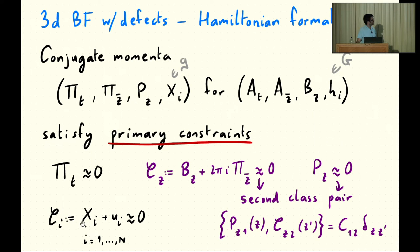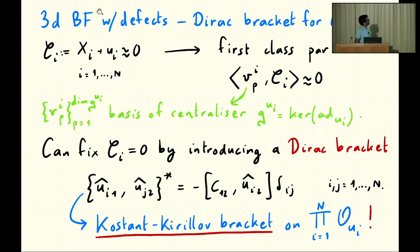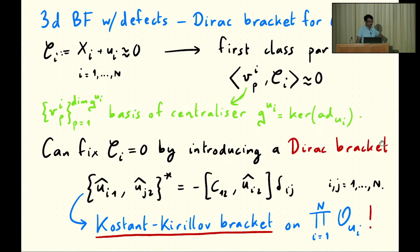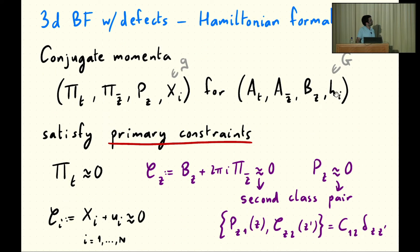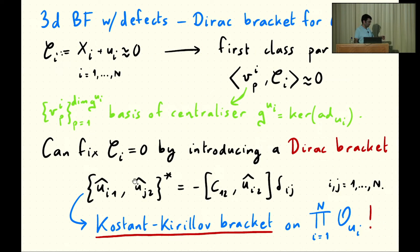To fix the other constraints C_I, it's more involved. This constraint is partly first class and partly second class. The first class part can be extracted by projecting onto the centralizer of the element U_I in the Lie algebra G. By introducing any gauge fixing condition for this first class part, you get a total set of second class constraints, which you can then fix strongly to zero by introducing a Dirac bracket. What you find in the end is that the Dirac brackets on the combination U-hat (which is H U_i H^{-1}) are precisely given by the Kirillov-Kostant bracket.